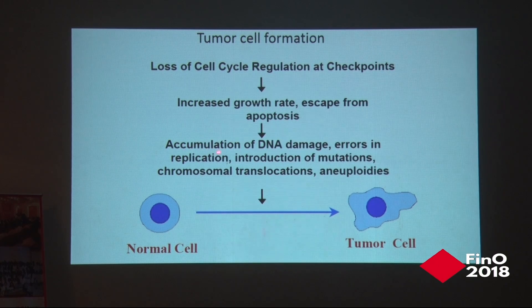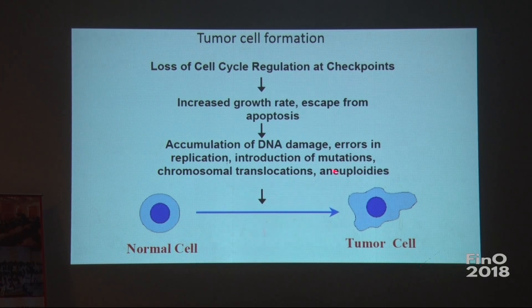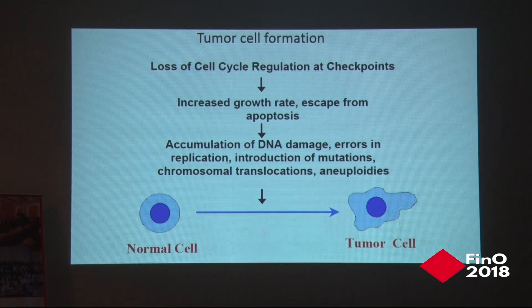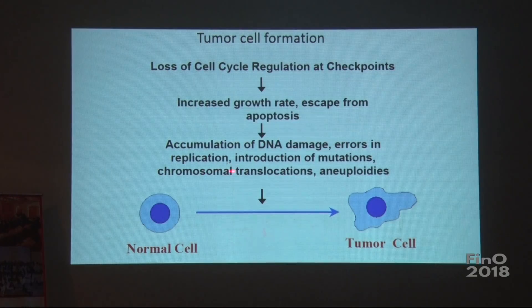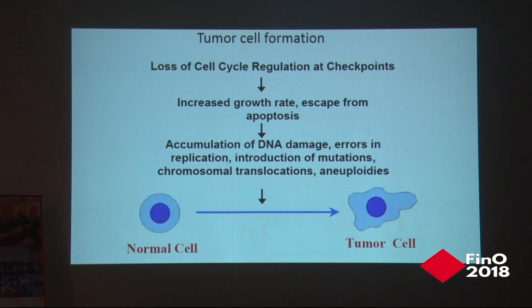This leads to accumulation of DNA damage, errors in replication, introduction of mutations, chromosomal translocations, and aneuploidy. Over multiple divisions, the cell acquires more and more DNA mutations, leading to more chromosomal translocations and aneuploidy, and the normal cell is transformed into tumor cells.